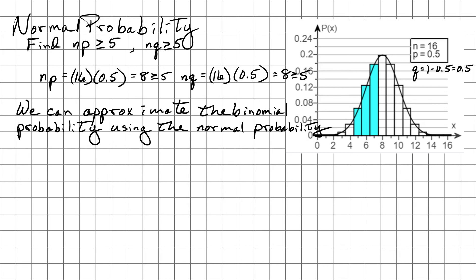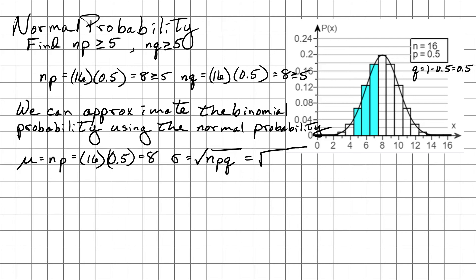In order to do that, we're going to need to find our mean and our standard deviation. So mu is simply going to be N times P, which we already know: that's equal to 16 times 0.5, which equals 8. And the standard deviation sigma is going to be equal to the square root of NPQ, which is the square root of 16 times 0.5 times 0.5, which is simply equal to 2.